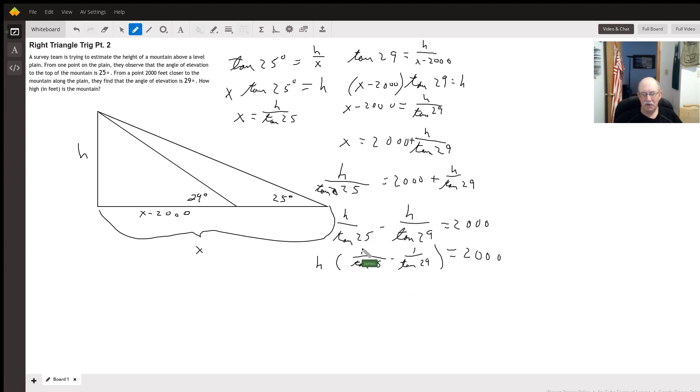Now, we can divide both sides by what's in the parenthesis here. We get h equals 2,000 divided by 1 over tangent of 25 minus 1 over tangent of 29.